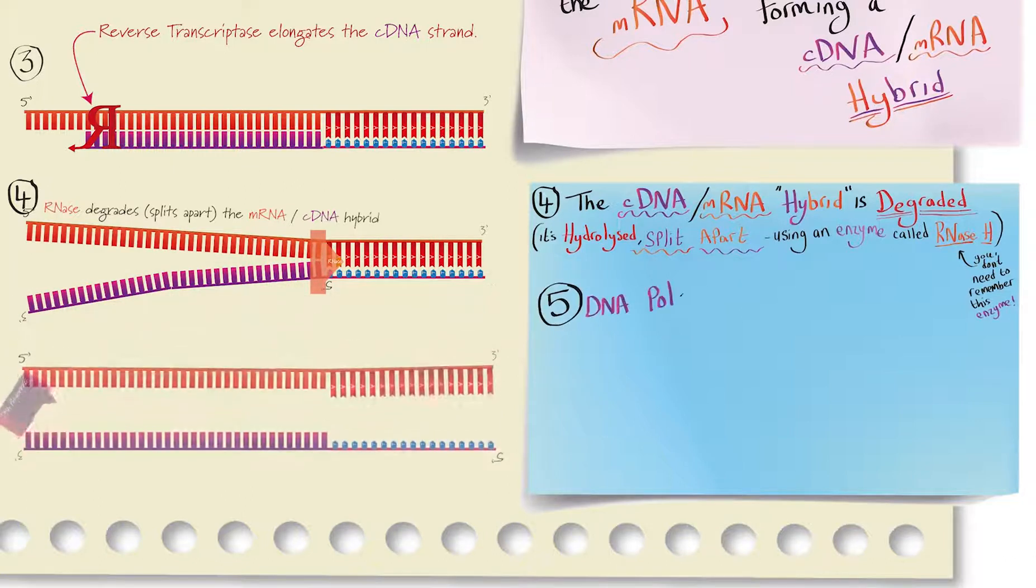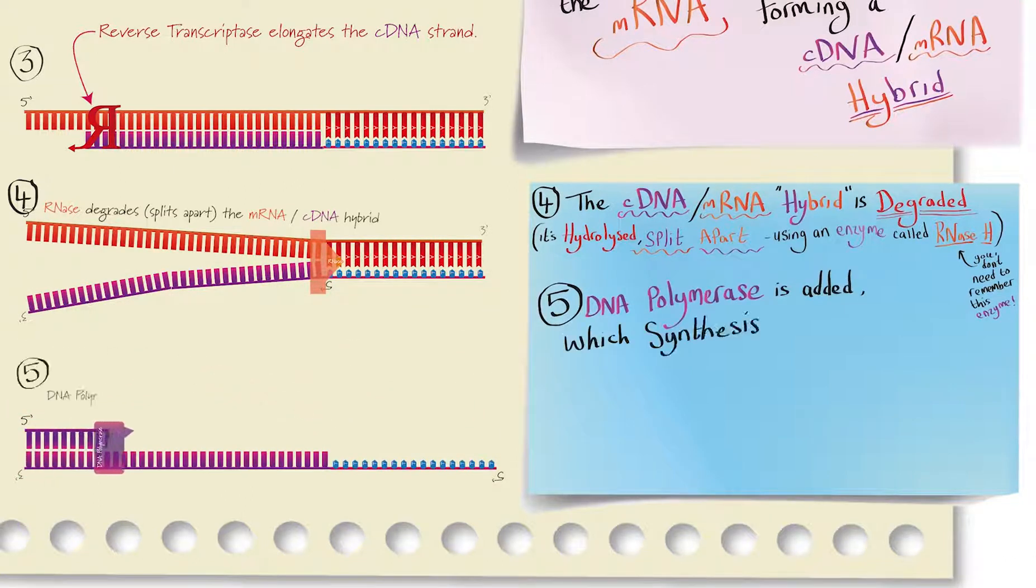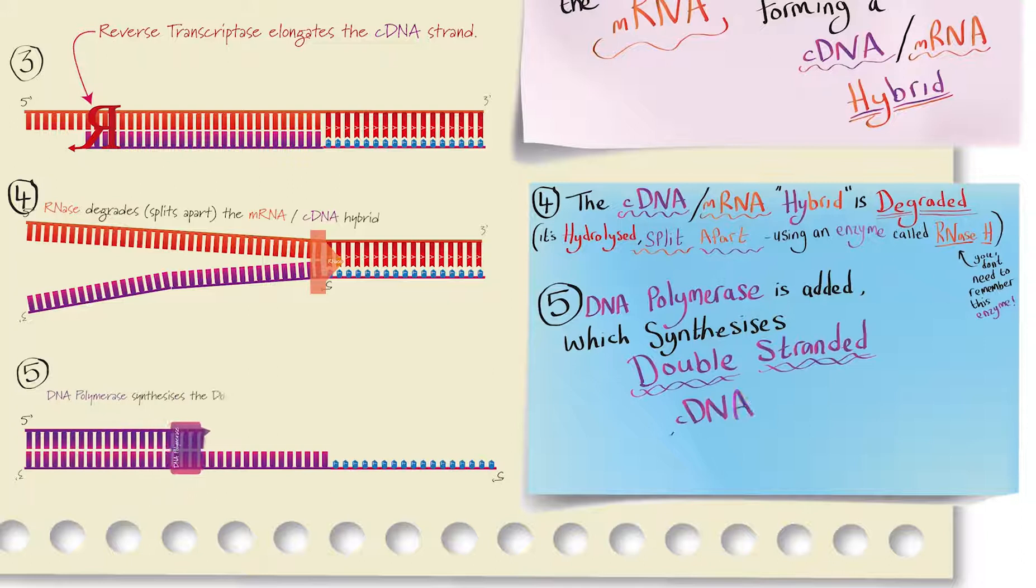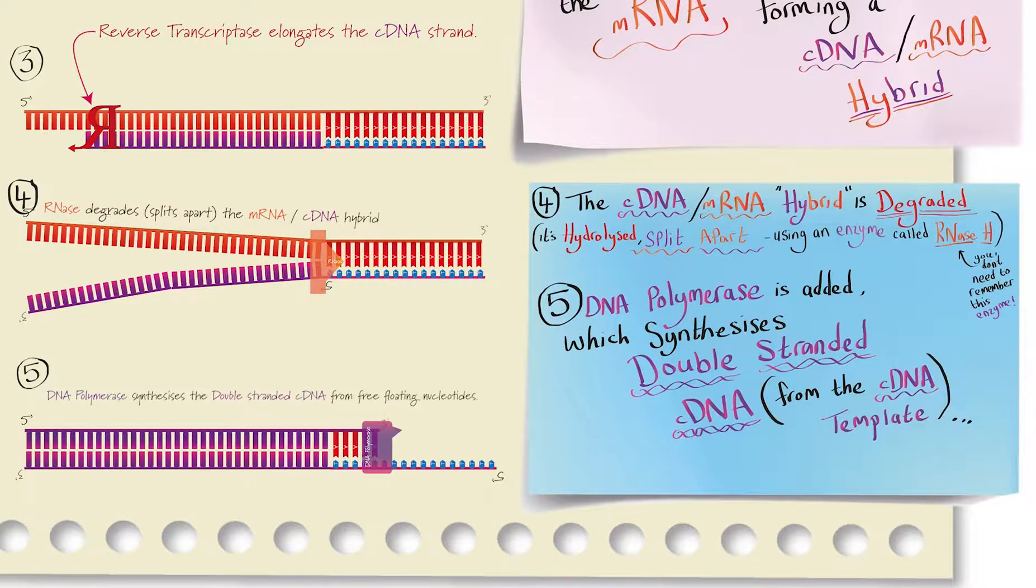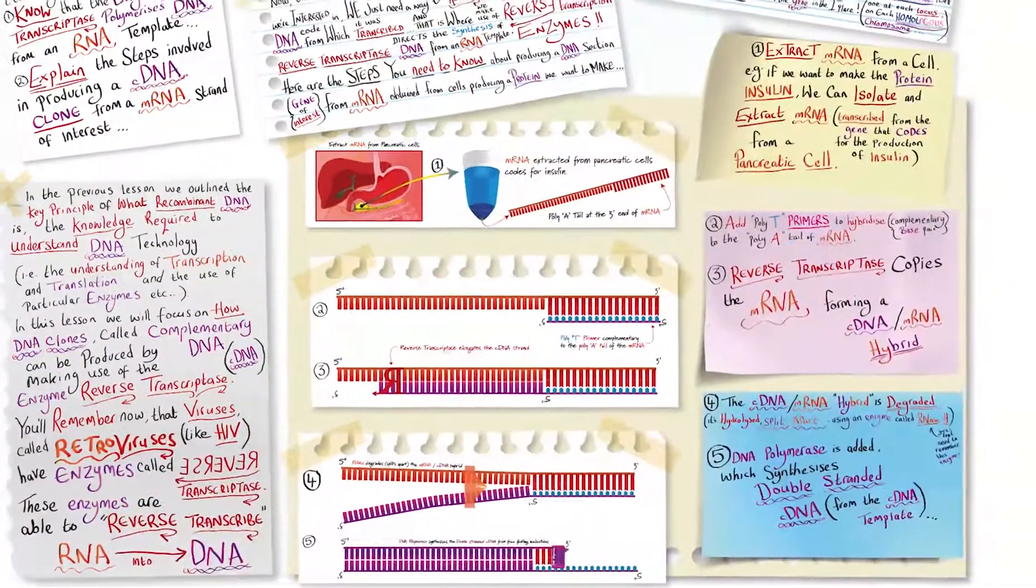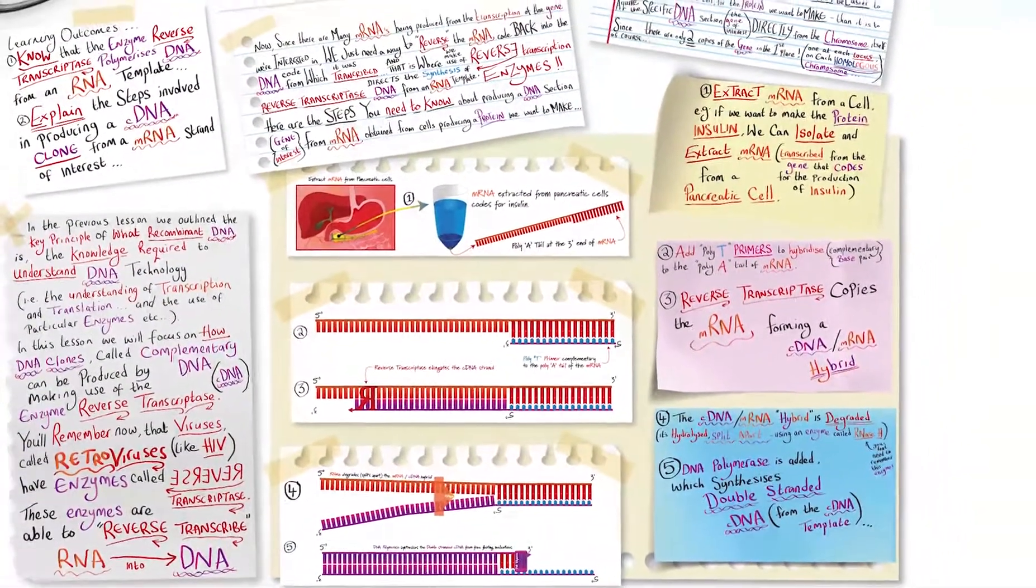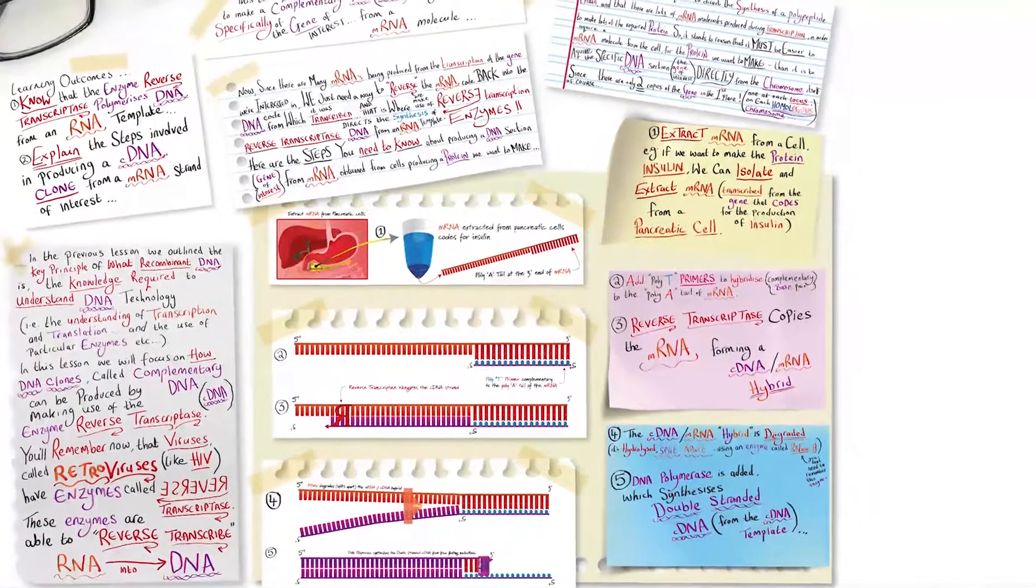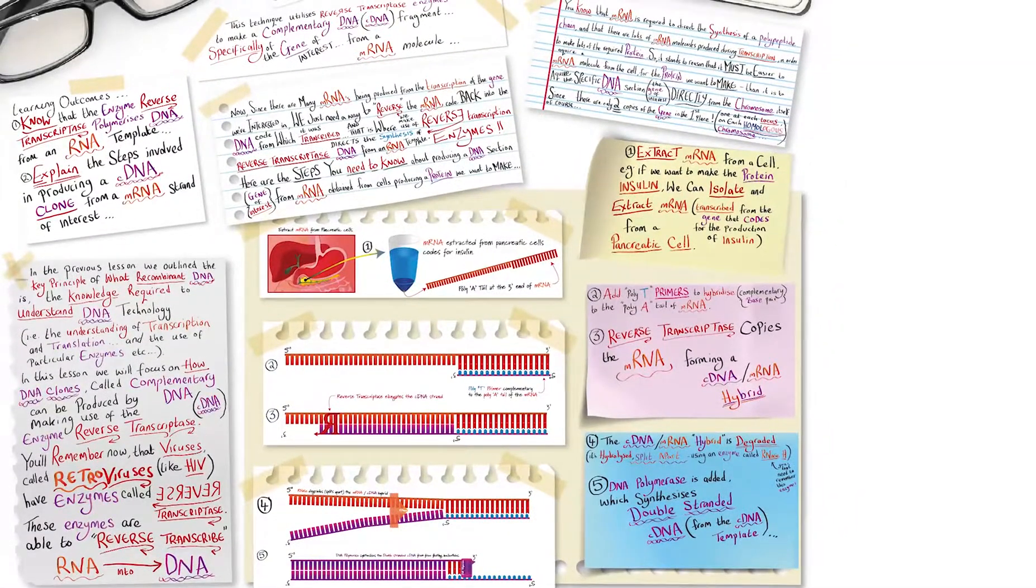Step five, DNA polymerase is added which synthesizes a double-stranded complementary DNA from the complementary DNA template. And there we have it, we have produced a complementary DNA molecule from a messenger RNA molecule that codes for a protein we want to make lots of, for example insulin.